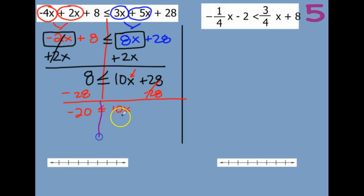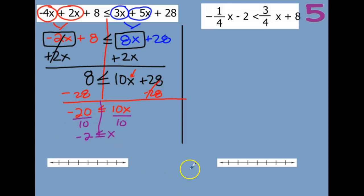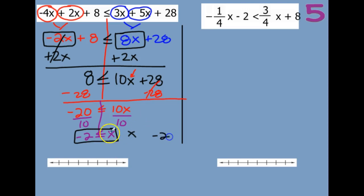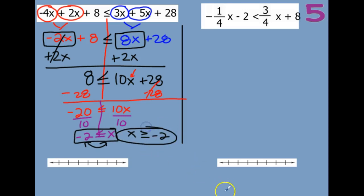Then we need to divide by 10. So we get x is less than or equal to a negative — 20 divided by 10 is 2. However, this is what I was saying: we have to flip this around at the end here because we can't graph this like it is. So flip your symbol as well — now I can graph this.